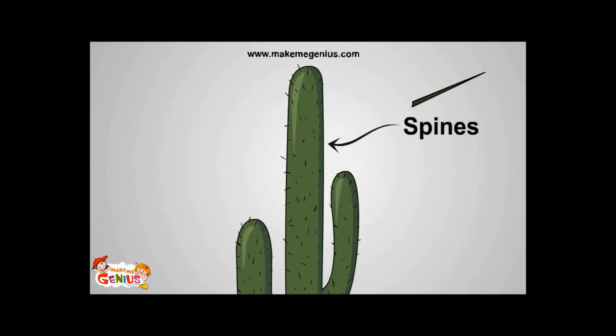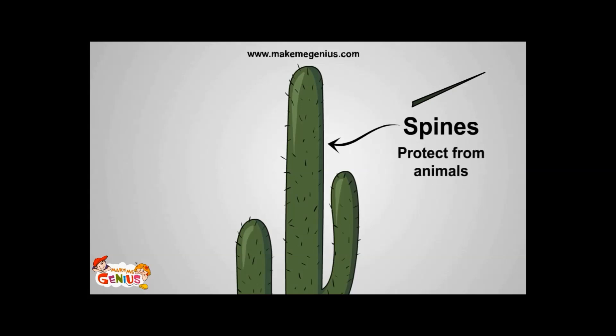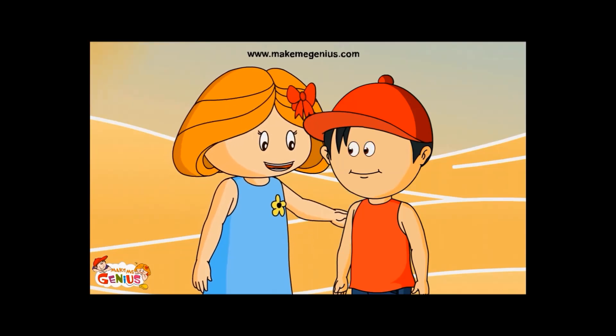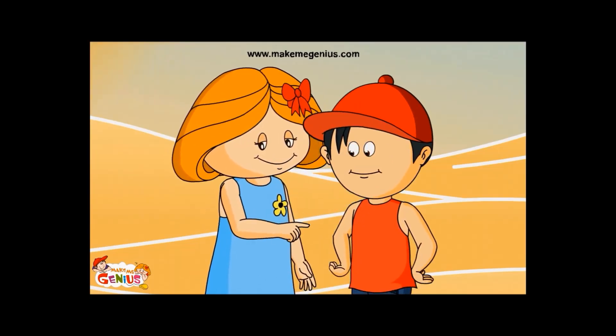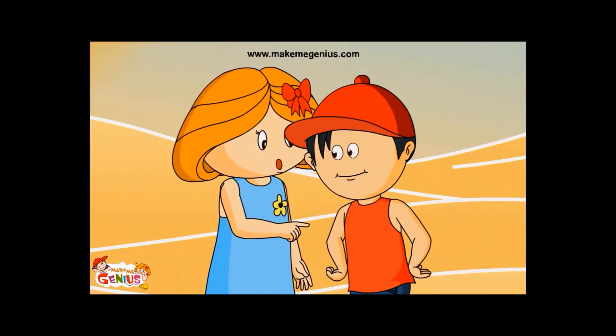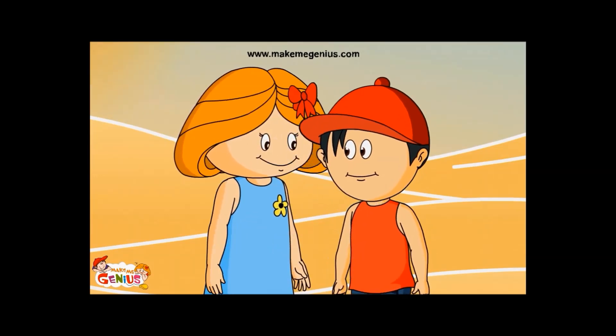So in place of leaves, cactus have spines. Spines reduce the surface area, so less water is lost — less surface area means less water escapes out. And due to spines, no animals can eat the cactus. This adaptation in cactus helps it to save itself from being eaten by animals.